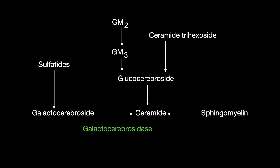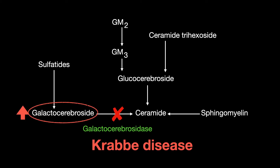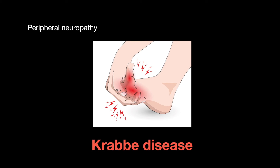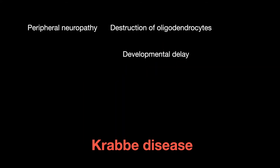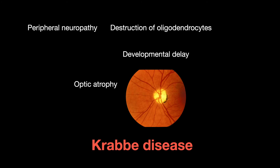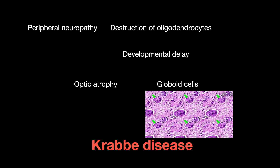Galactocerebrosidase catalyzes galactocerebroside to ceramide, and a deficiency causes galactocerebroside to build up, known as Krabbe disease. This results in peripheral neuropathy, destruction of the oligodendrocytes, developmental delay, optic atrophy, and globoid cells.